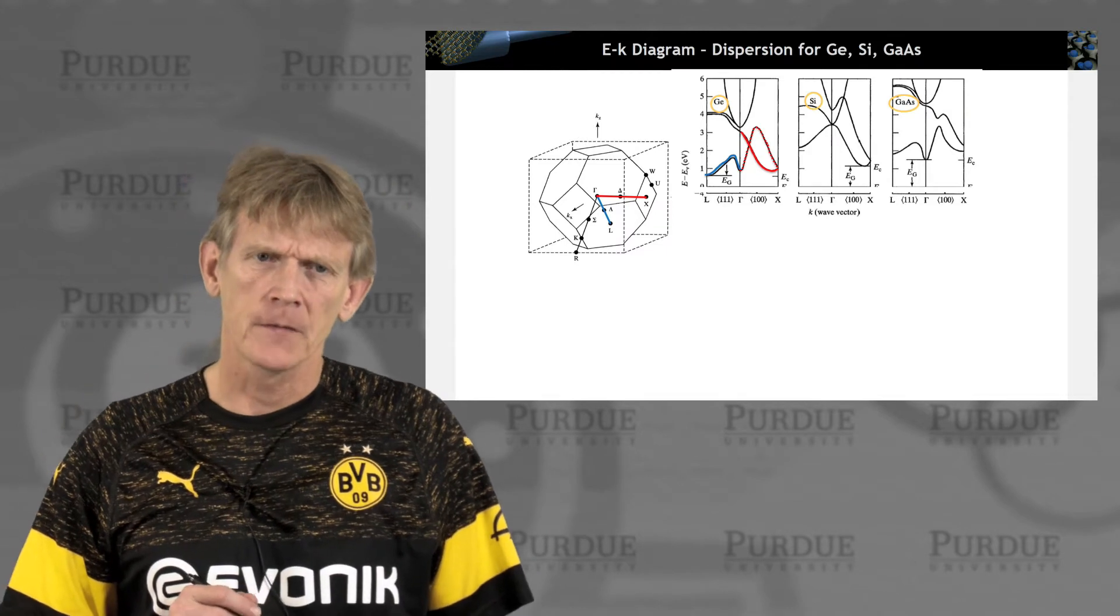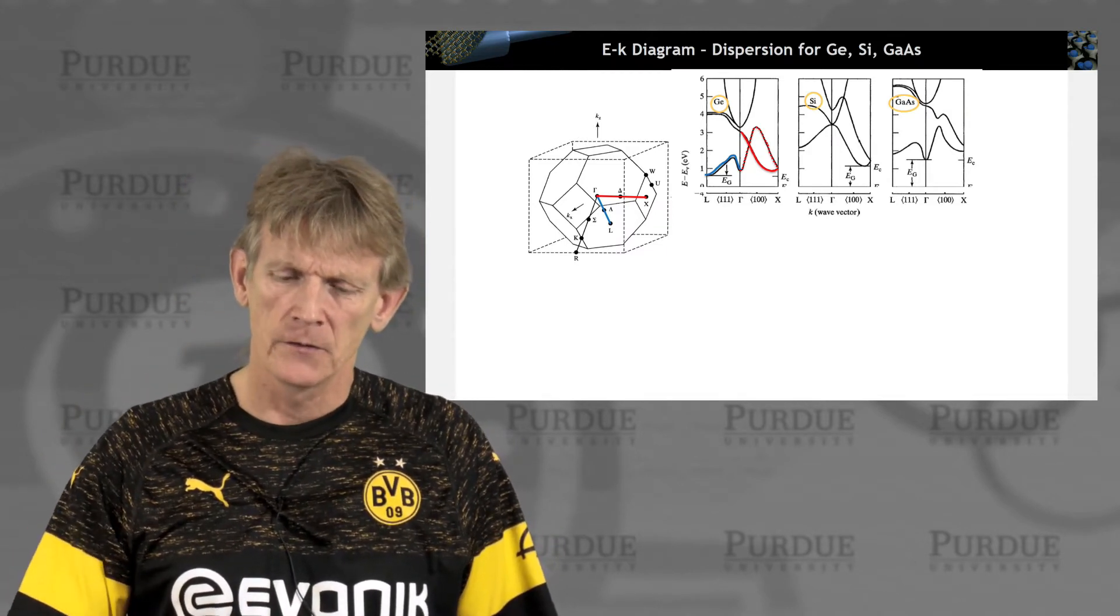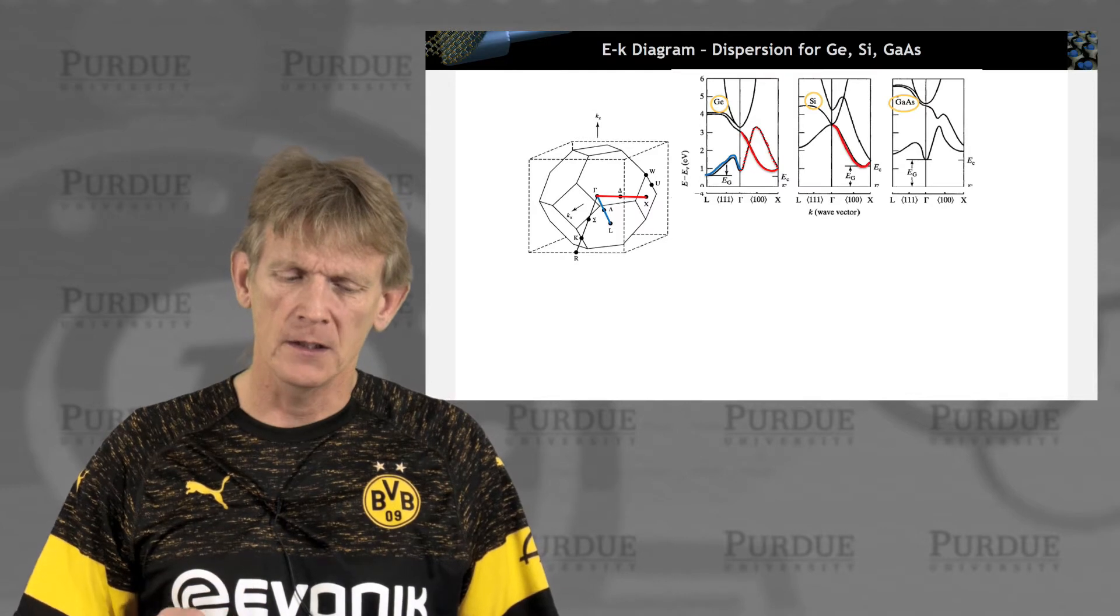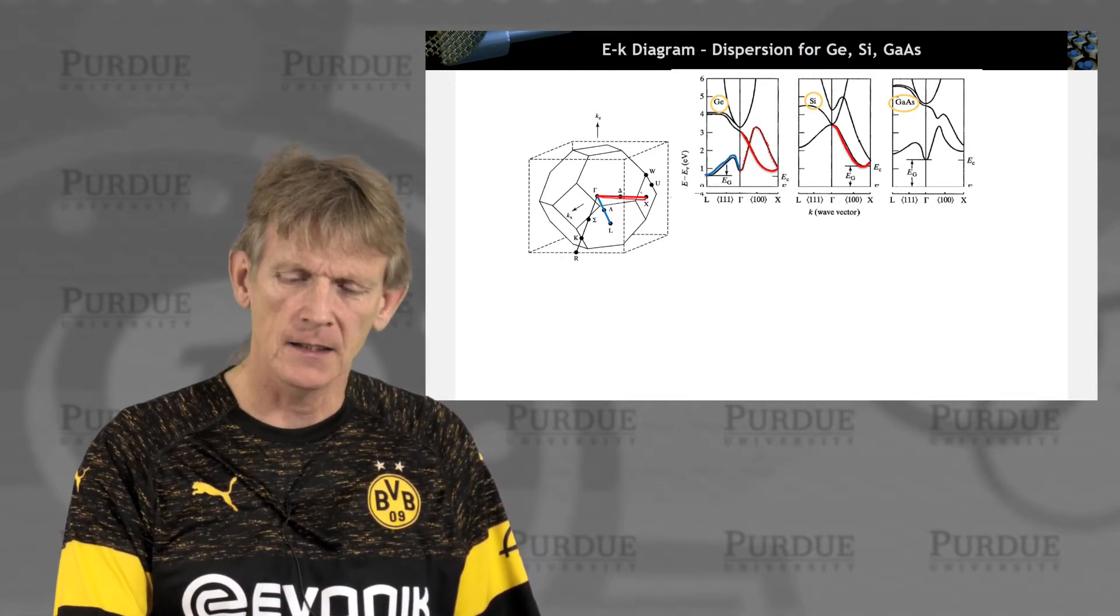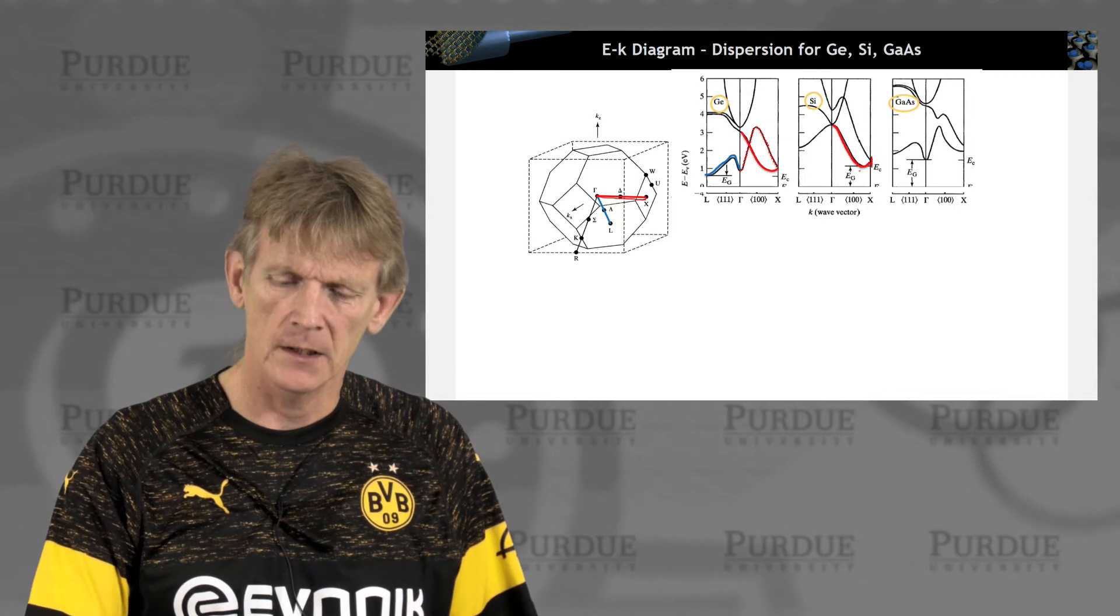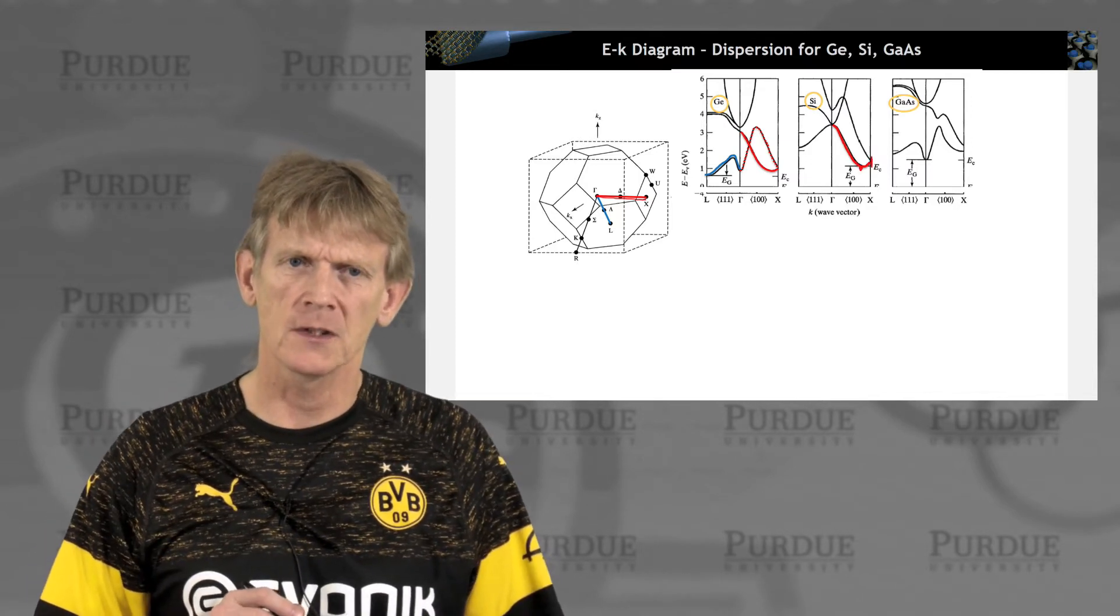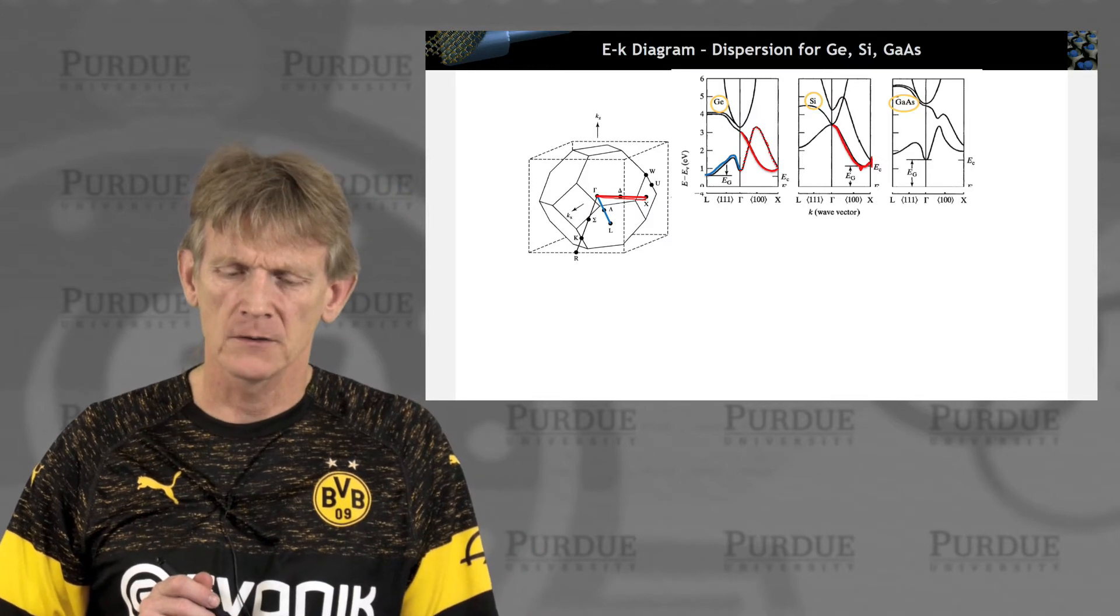All right. So for silicon, the matter is slightly different. For silicon, the minimum point is actually along this delta line. It's not exactly at X, but it's a little bit inside of X, 15% of the Brillouin zone.